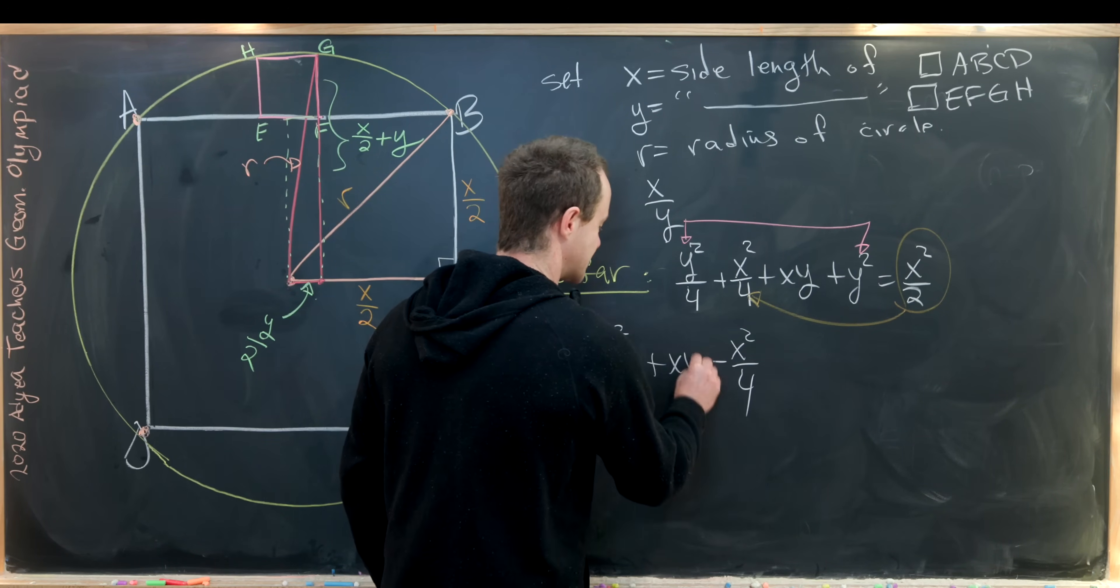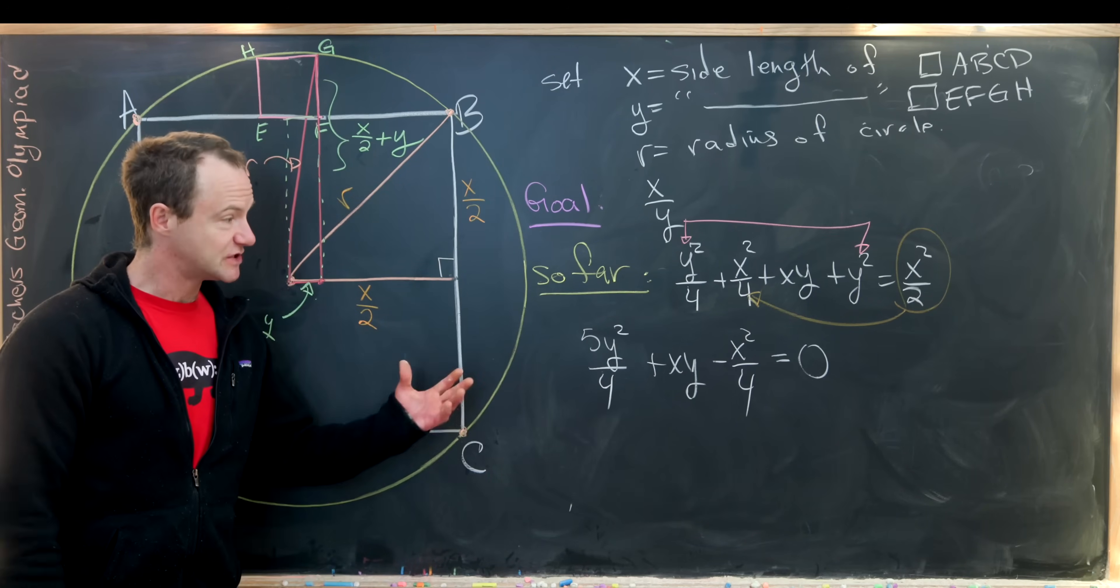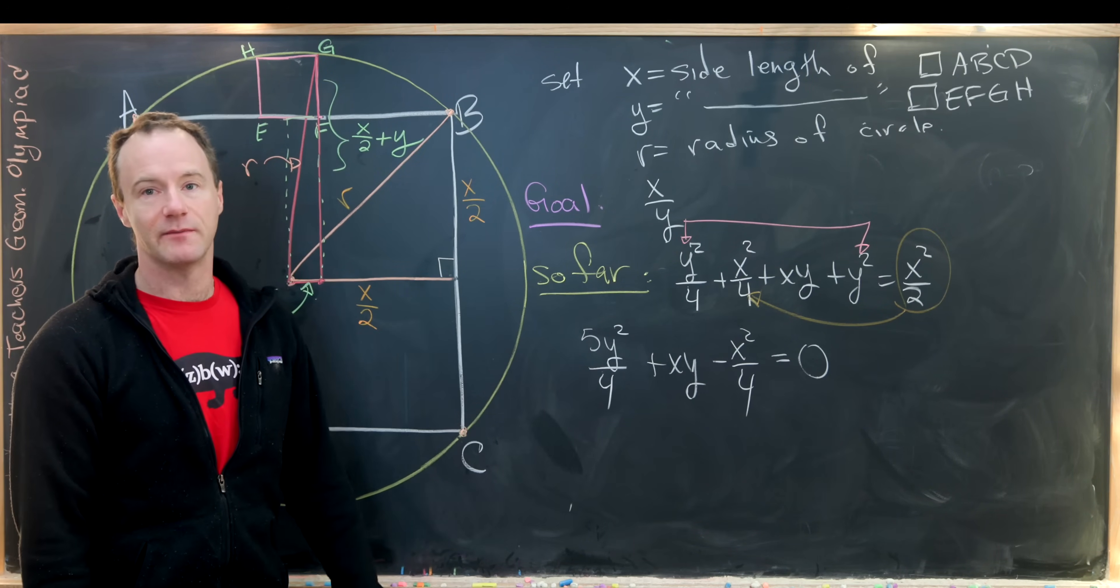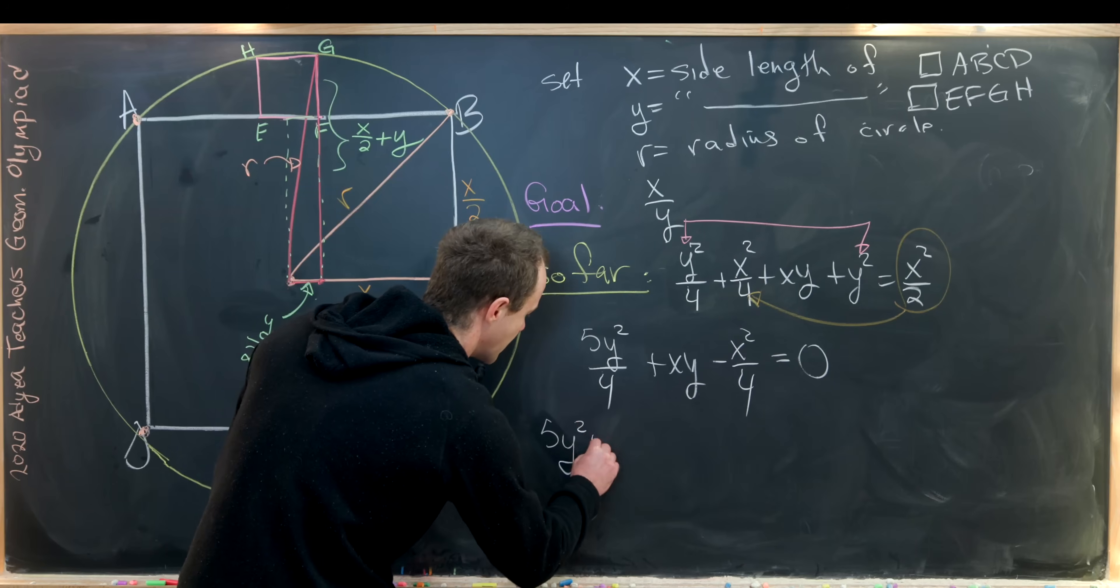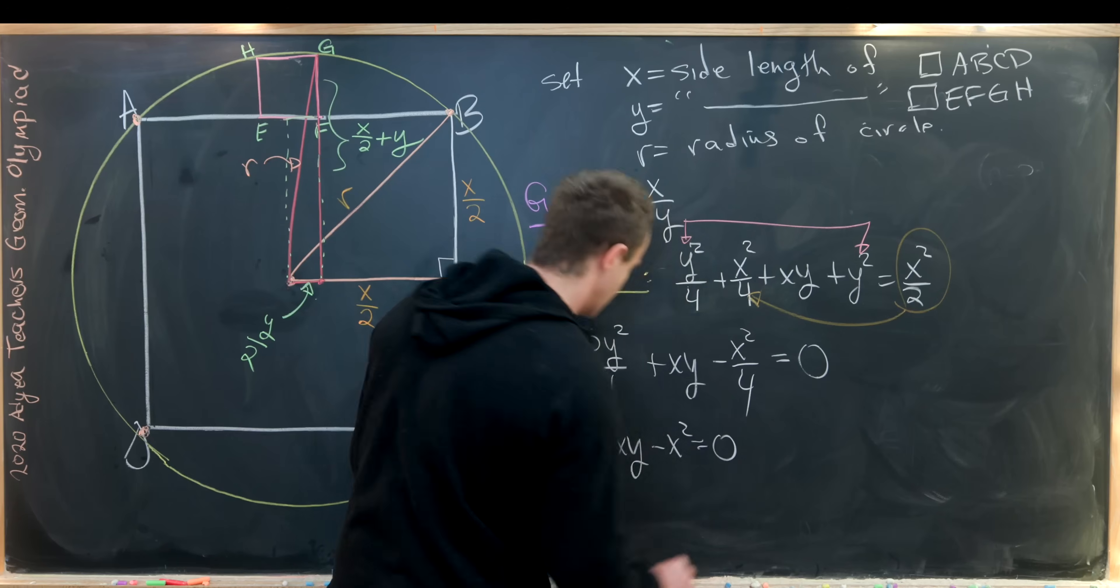Then finally, this plus XY term doesn't really change at all. So now we've got that, which is maybe a little bit easier to work with. Now from here, maybe we'll multiply by 4 just to clear denominators. That gives us 5Y squared plus 4XY minus X squared equals 0.